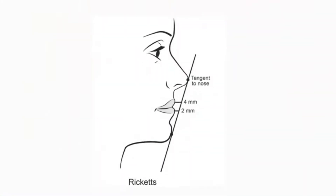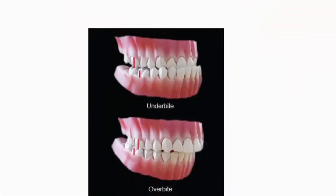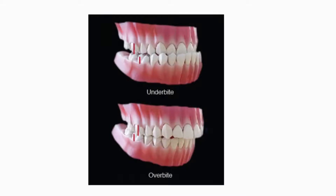When we look at the profile picture of the patient and draw a line from the tip of the nose to the chin, the lower lip is projected much more compared to the upper lip. The upper lip is usually four millimeters behind this line, and the lower lip is two millimeters behind this line, as the lips are on the teeth.